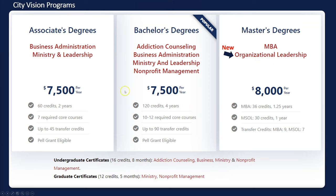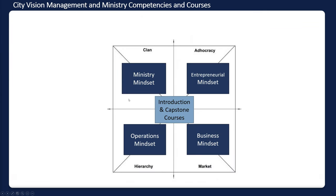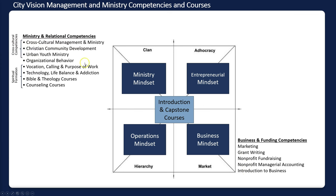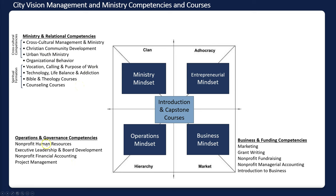We have two schools: the Addiction Counseling School and the School of Ministry and Management. Within the School of Ministry and Management, we use a competency grid to define four mindsets: ministry mindset, entrepreneurial mindset, operations, and business. The business courses include marketing, grant writing, nonprofit fundraising, managerial accounting, and introduction to business — these are how you'll get revenue for your nonprofit. On the ministry side, we have many courses on cross-cultural competency, spiritual formation, Bible, and theology. On the operations side, there's financial accounting, human resources, executive leadership and board development, and project management.